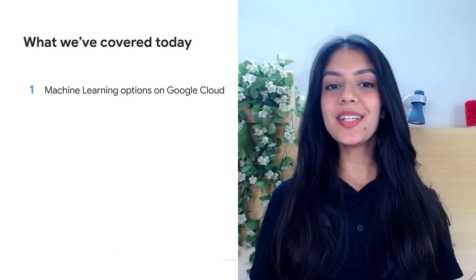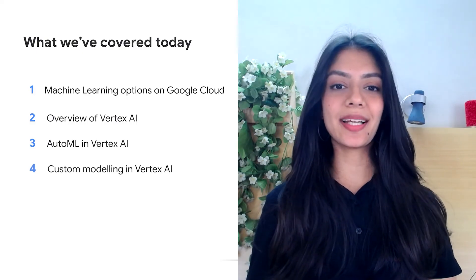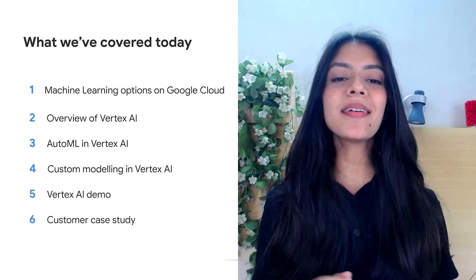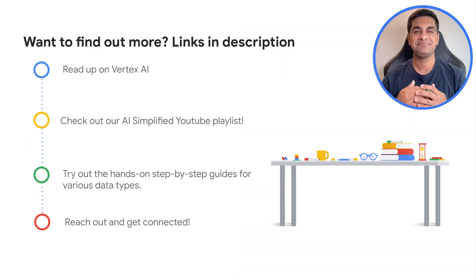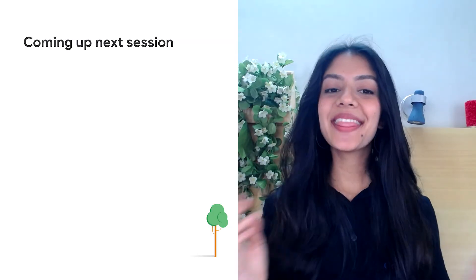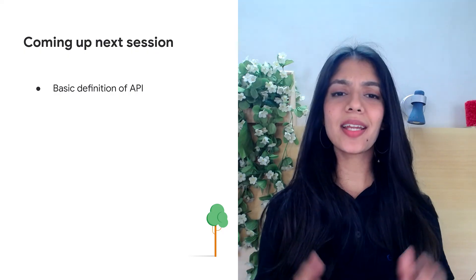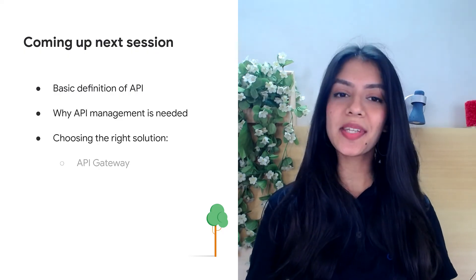In this session, we understood the various machine learning offerings of Google Cloud and Vertex AI, deep-dived into AutoML and custom models, saw a hands-on demo, and reviewed a customer success story. If you're interested in learning more, please click the links in the description to read up on Vertex AI, check out our AI Simplified YouTube playlist, and try step-by-step guided tutorials. In our next video, we'll go over API management — what APIs are, why you need API management, and choosing between API Gateway and Apigee. Don't forget to like and subscribe, and click the bell icon to get notified when new videos are posted.